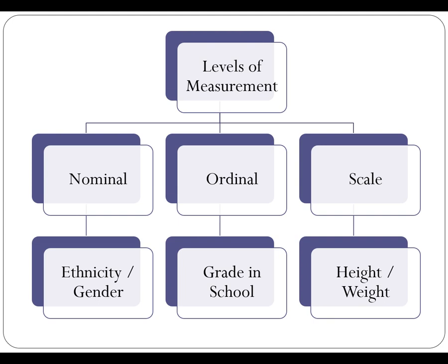Ordinal level of measurement takes on an additional characteristic. For example, grade in school — you could be described as a freshman, a sophomore, a junior, or a senior based on the number of credits you've taken. We can rank those in terms of the most school completed to the least: a senior has completed more schooling than a junior, a junior more than a sophomore, and so on. So ordinal level of measurement takes on that additional characteristic of being able to be ranked. You might ask, can't ordinal data also be nominal? Yes, it can — but we always want to assign the highest level of measurement to that variable possible.